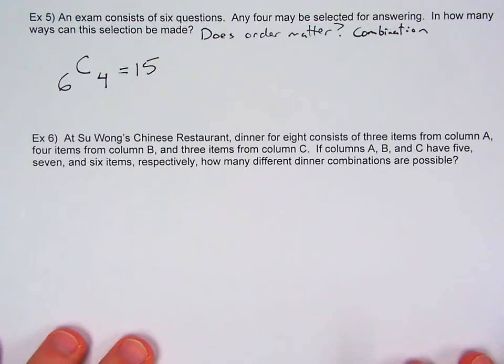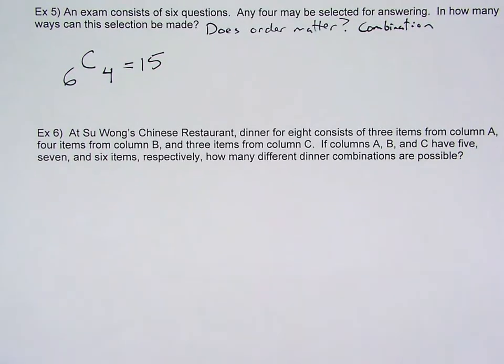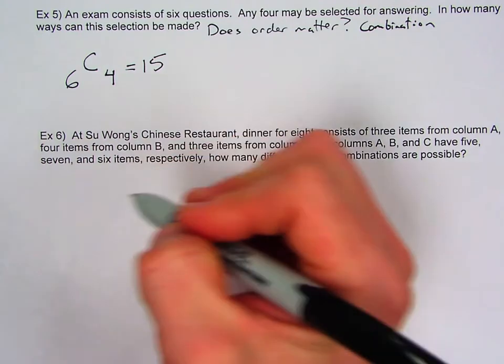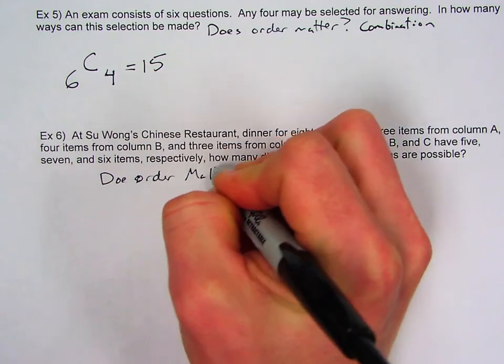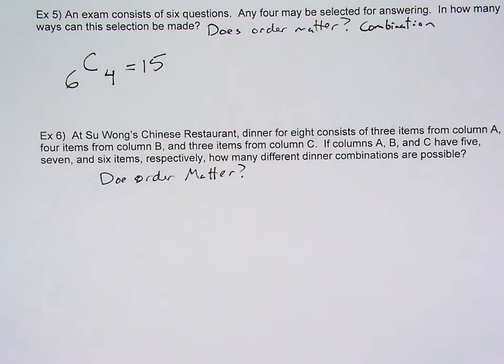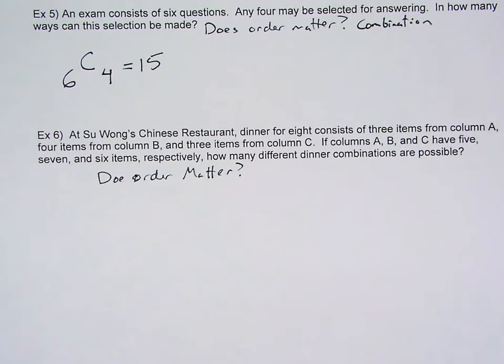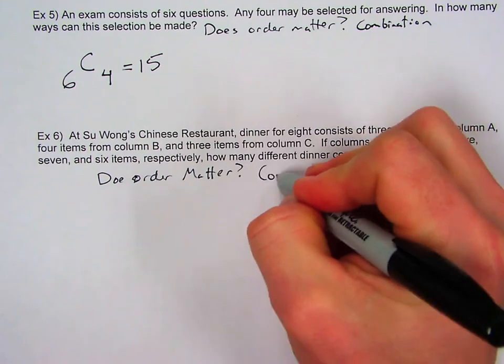Our next question. Here is our combination. I love Chinese food here because you do get so many choices. So at Su Wong's Chinese restaurant, dinner for eight consists of three items from column A, four items from column B, and three items from column C. If columns A, B, and C have five, seven, and six items respectively, how many different dinner combinations are possible? So what we want to do here first is ask ourselves, does order matter? And again, this is the food example. Do you care how it comes on your plate? No. It really doesn't matter. So this is a combination.